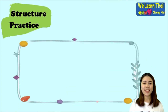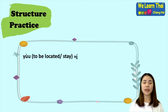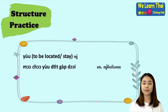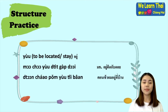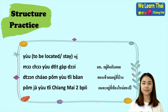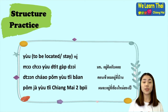Now let's talk about structure practice. The first word is 'yu', which means to be located or to stay. For example: 'mo shaw yu tic krab doi' — Chiang Mai University is next to the mountain. In the morning I am at home. I will stay in Chiang Mai for two years.